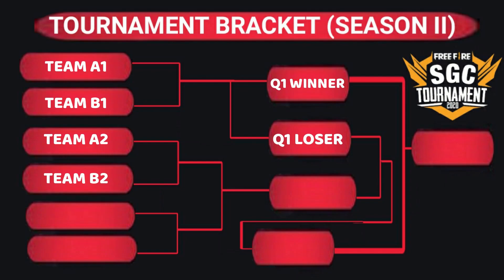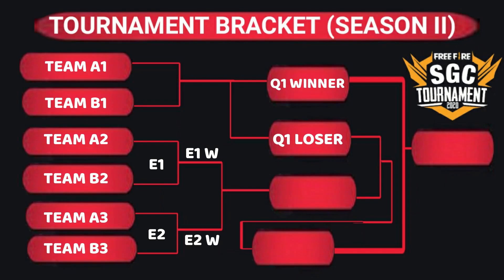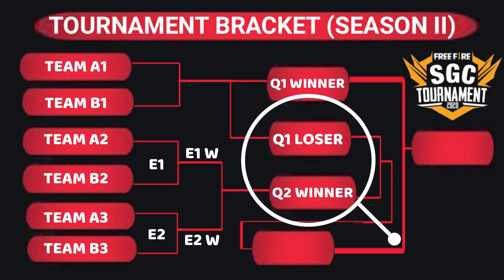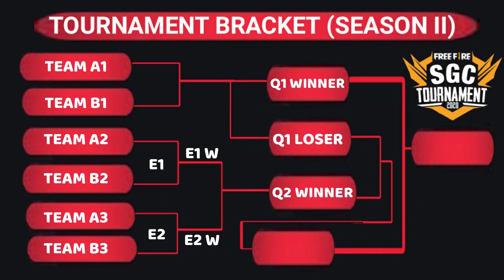Group A second place and Group B second place — Team A2 and Team B2 — play Eliminator 1. Team A3 and Team B3 play Eliminator 2. The winners of Eliminator 1 and 2 advance to Qualifier 2, and the winner of that match goes to the grand final.